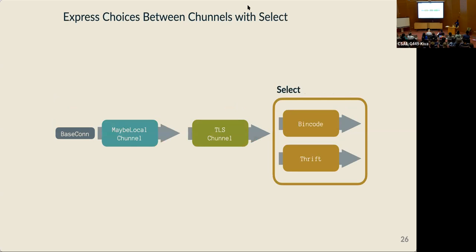To represent a choice between multiple implementations, the application developer can use what we call a select. For example, I'm showing two example implementations of the serialization channel using bincode and Thrift. When Bertha is going to make a connection, it compares the available implementations on each side of the connection and picks compatible branches of the select. These select points in the channel stack are how we represent the different stacks the application can choose between when making a connection.